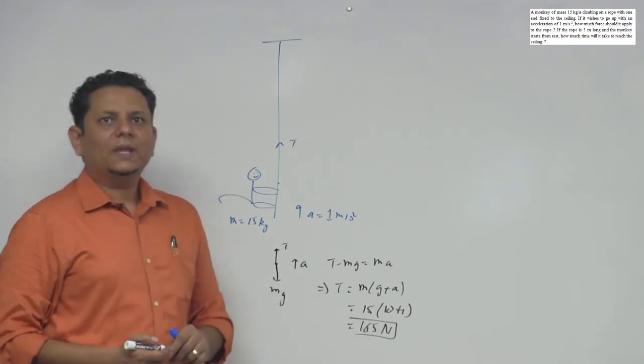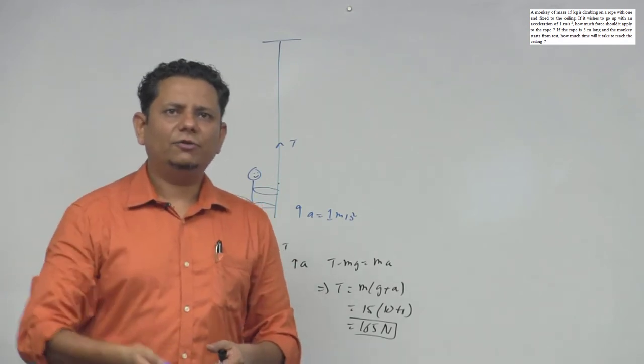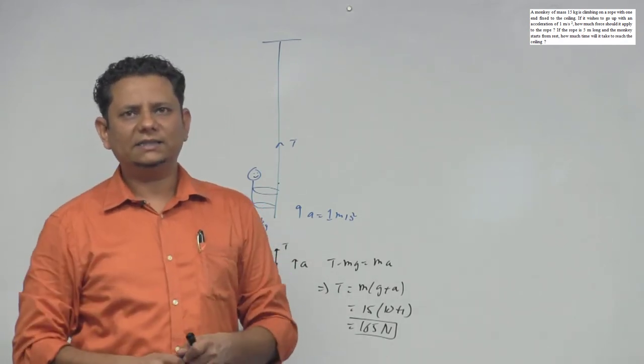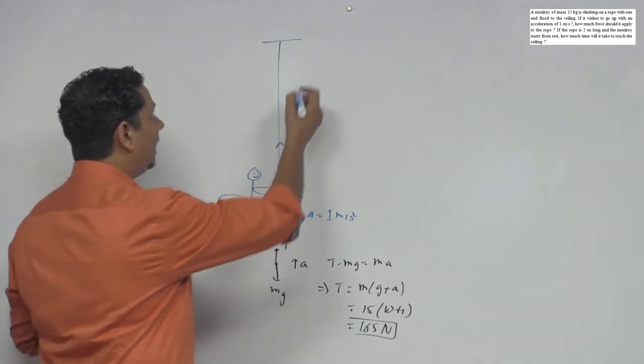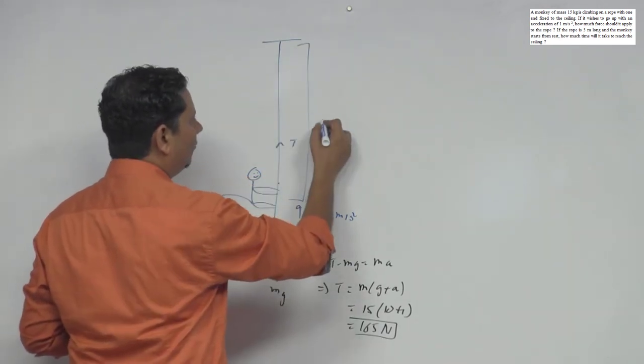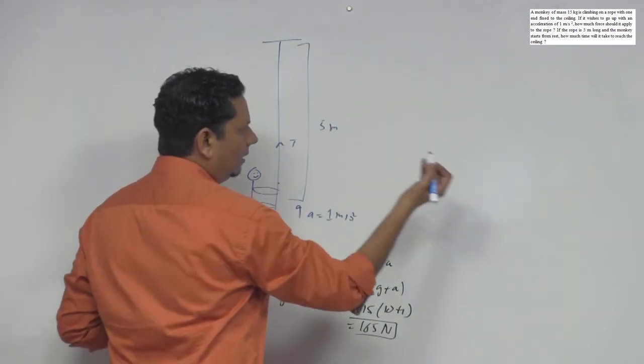Second part: If the rope is 5 meters long and starts from rest, how much time will it take to reach from here to there? Five meters is the distance, we need to find the time.